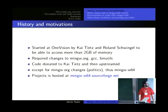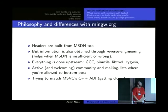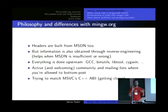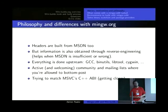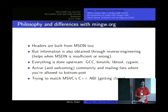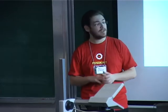That situation gave rise to the MinGW-w64 project, which is now hosted on SourceForge. What's similar to MinGW.org is that headers information comes from MSDN — that's a public source of information, no issue. But one big theoretical difference is that headers can also be built through reverse engineering. MinGW.org does not want anything to do with that; they want to stay clear of any legal issues, so they stay with MSDN.